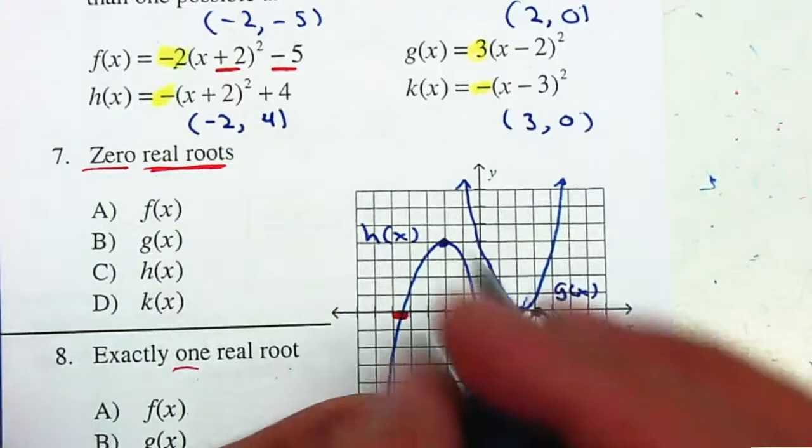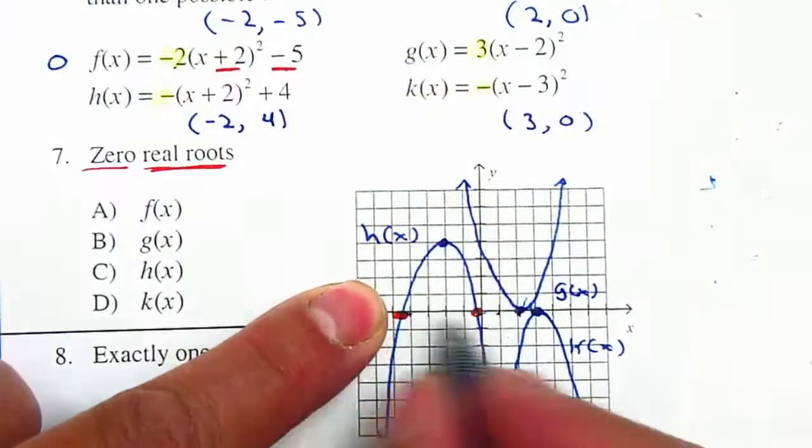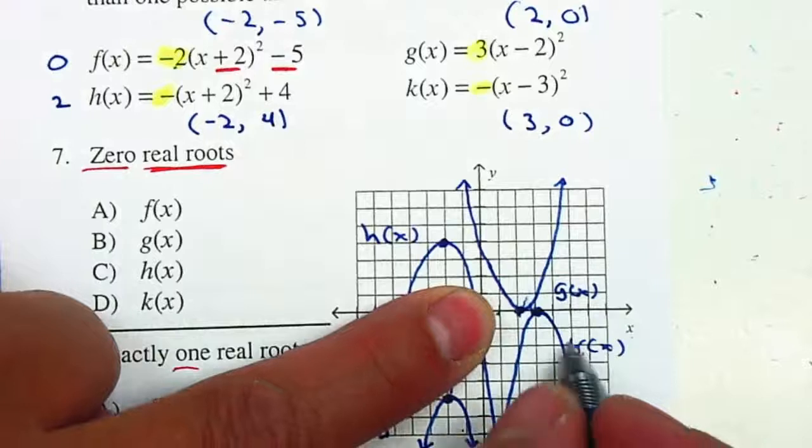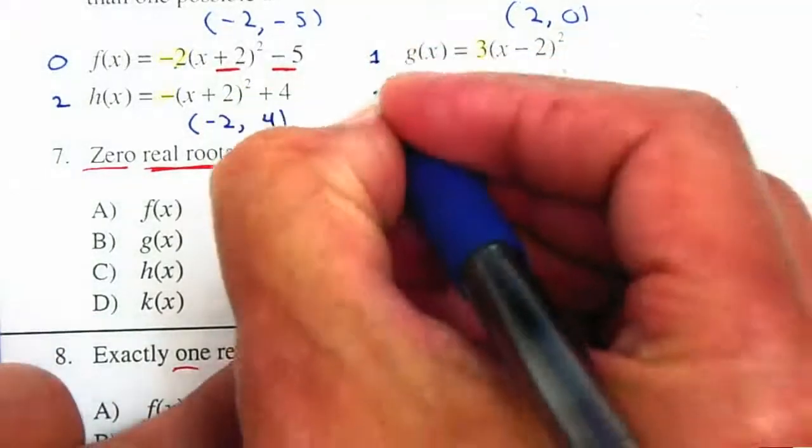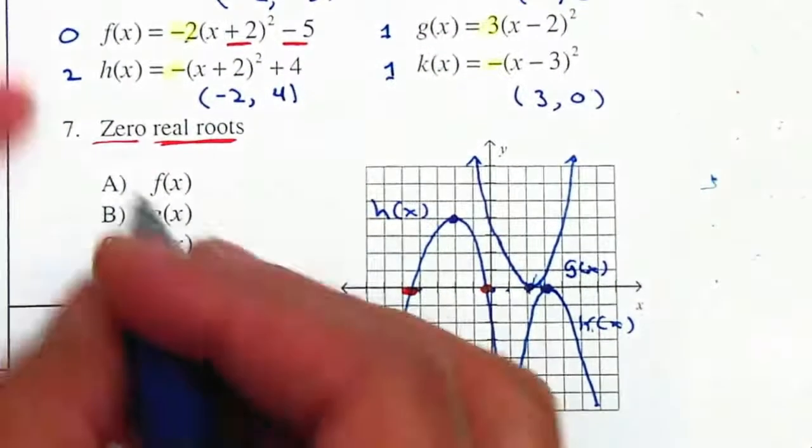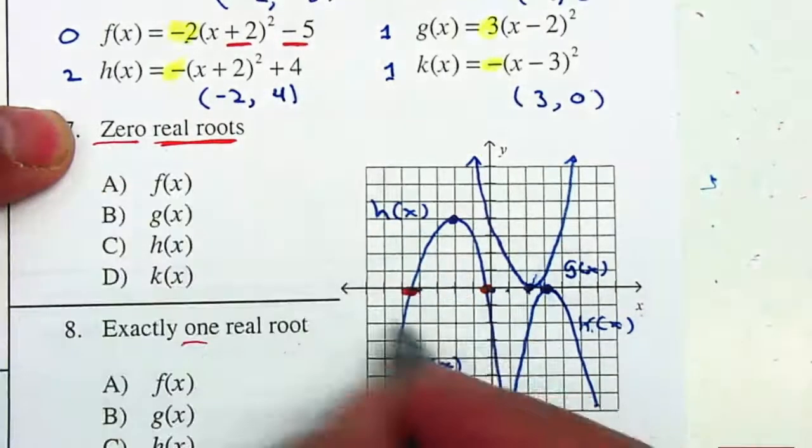So let's see. F of x crosses it at 0 times. H of x crosses it twice. It has 2 real roots. G and k of x cross once only. So we can now answer the question. Which of them has 0 real roots? That means that it has no x-intercepts.